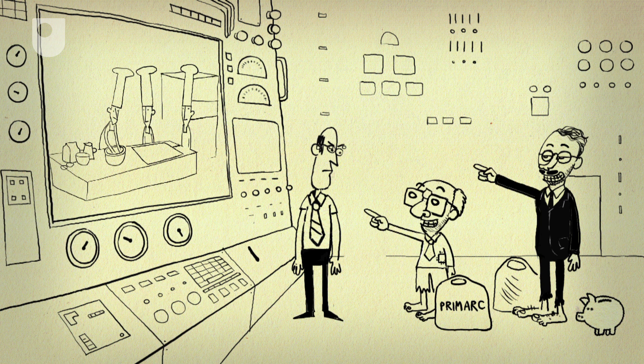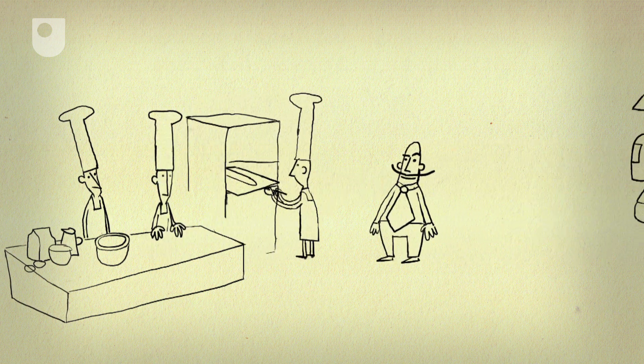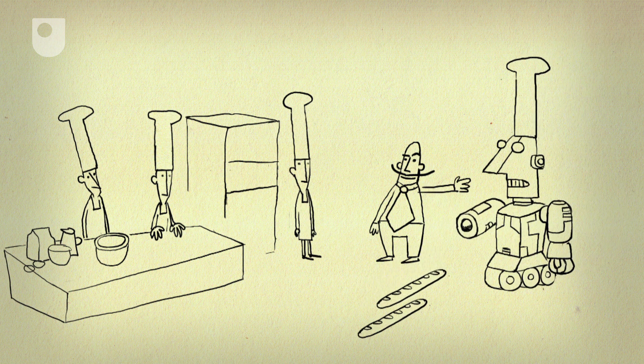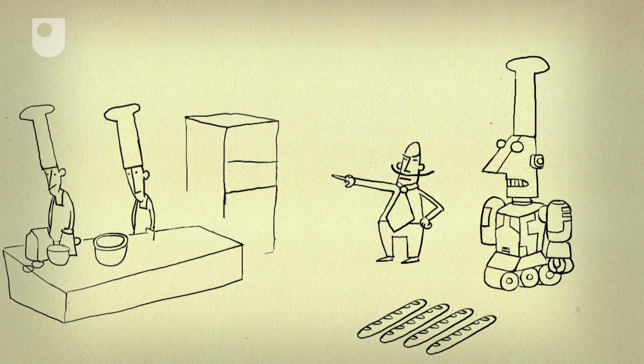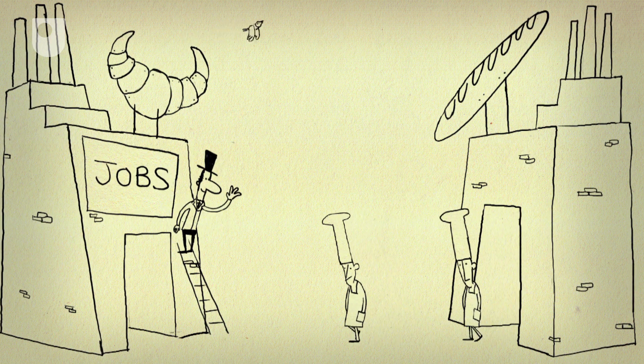Banks then channel the savings into investment, in new plants, skills and techniques that let us produce more. And even if this new technology destroys jobs, wages will drop and businesses hire more people. So unemployment falls again.